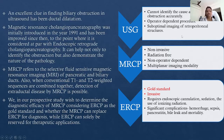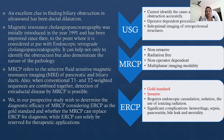Magnetic resonance cholangiopancreatography, MRCP, was initially introduced in the year 1991 and has been improved since then to the point where it is considered at par with endoscopic retrograde cholangiopancreatography, ERCP. It can help not only to identify the obstruction but also demonstrate the nature of the pathology. MRCP refers to the selective fluid-sensitive magnetic resonance imaging of pancreatic and biliary ducts. When conventional T1 and T2-weighted sequences are combined together, detection of extra-ductal diseases by MRCP is also possible.